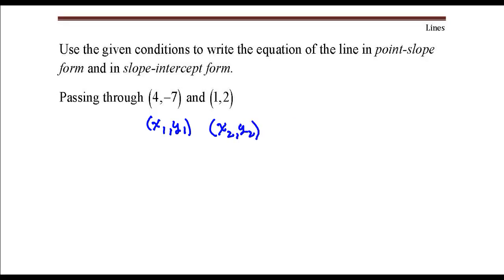The equation of the line in point-slope form is going to have this form: y minus y1 equals the slope times x minus x1.